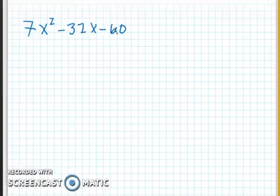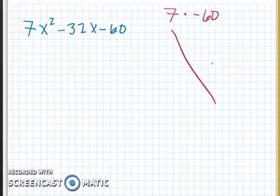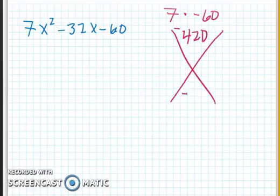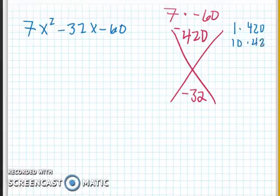Here's another one. 7 times -60. Those are big numbers, huh? We can deal with big numbers. So 7 times -60. We can just think of what's 7 times 60. It's 42. So it's going to be 420, negative. And then this is going to be -32. They're both negative. So I'm looking for something that has a difference of that amount. So let's start with some of our easy factors. 1 times 420. That's not going to do it. What about 10 times 42? Those actually could work.